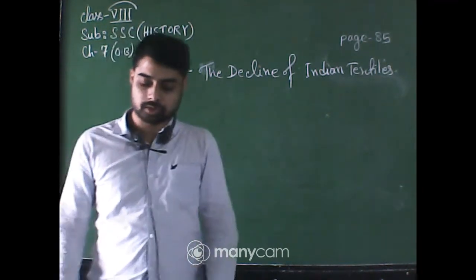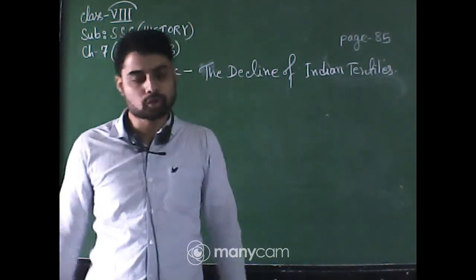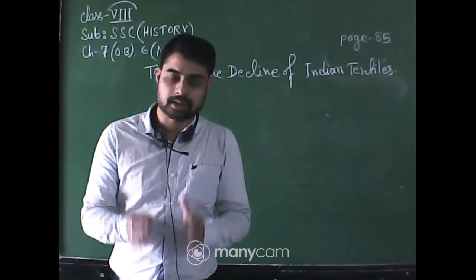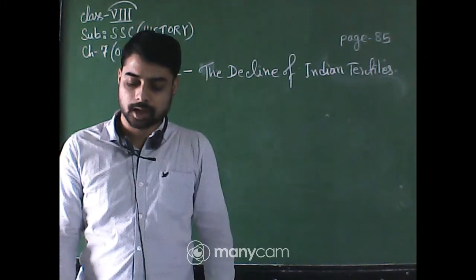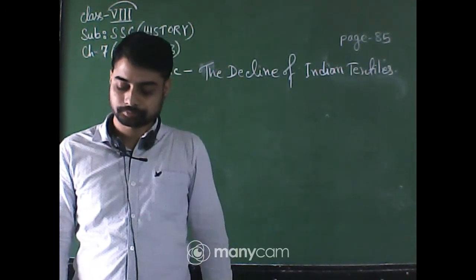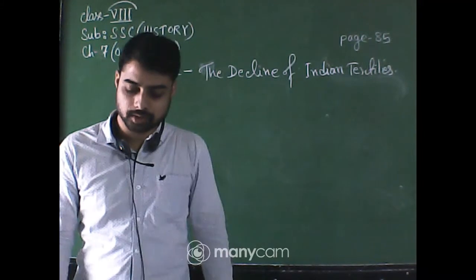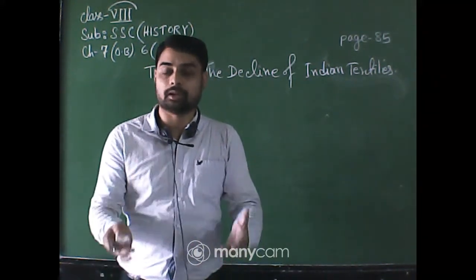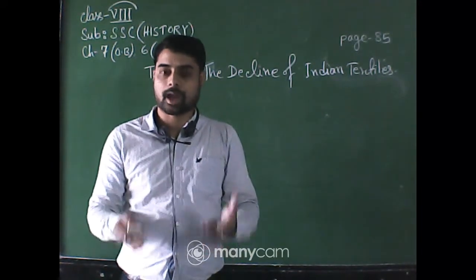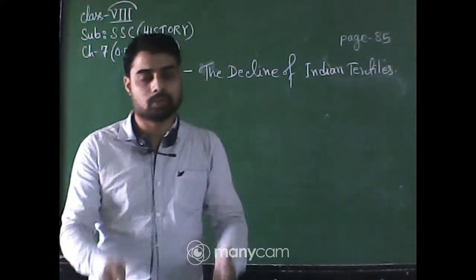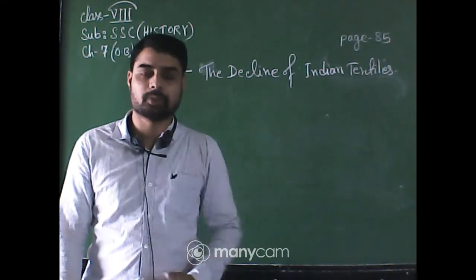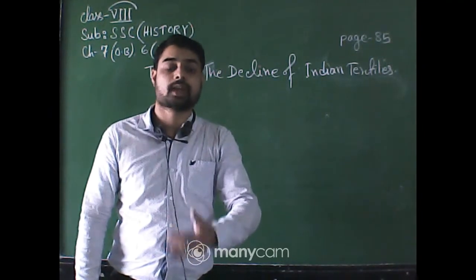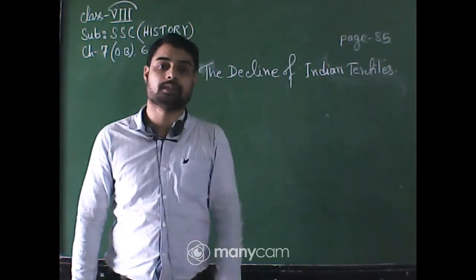During the national movement, Mahatma Gandhi urged people to boycott foreign-made textiles and accept hand-woven and hand-spun Indian cloth. Khadi became the symbol of nationalism, and the Charkha was used in the middle of the tricolor first adopted by the Indian National Congress as a symbol of the national movement in 1931.